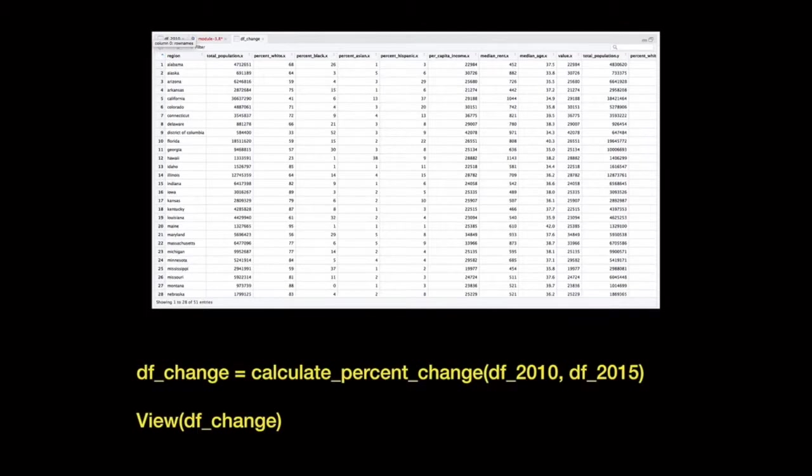You'll notice though that there are a lot of columns in the resulting data frame. This is because in addition to the new value column, all the columns from both data frames are also included. If you scroll all the way to the right in the viewer, you can find the new value column that has the percent change.